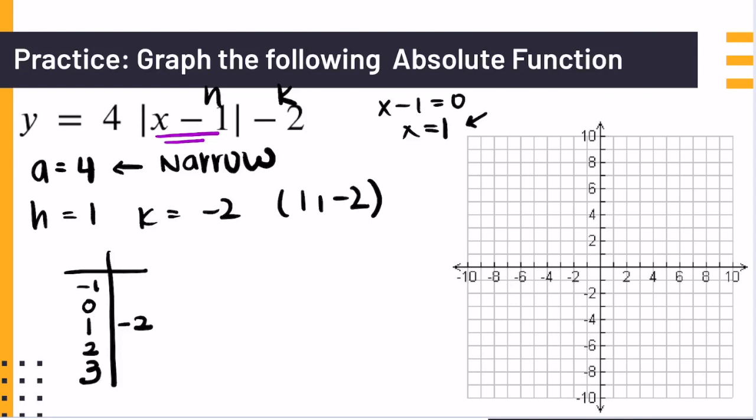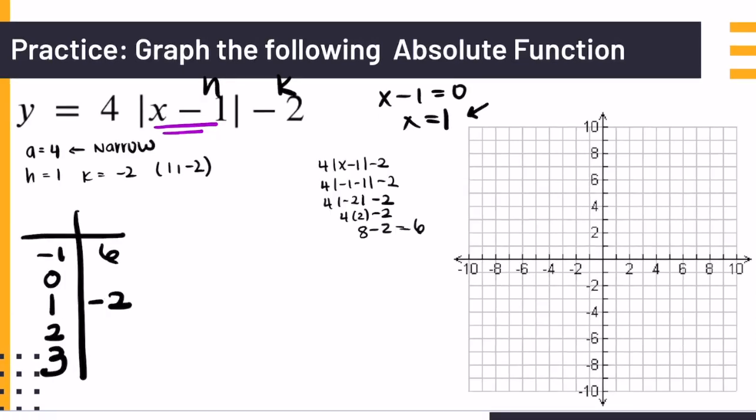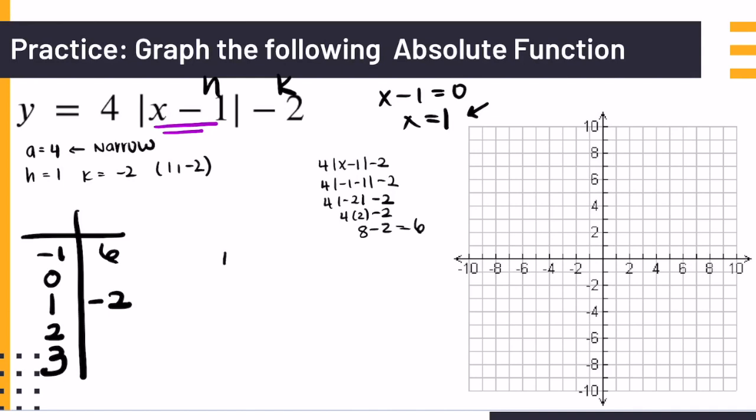Then you plug it into the original function, which is 4 absolute value of x minus 1 minus 2. For example, if you plug in negative 1, we'll get 4 times the absolute value of negative 2 minus 2. The absolute value of negative 2 is positive 2, and then we get 8 minus 2, which is 6. To solve for our next point, plug in 0 for x: 4 times 0 minus 1 minus 2. Simplify. Remember absolute value of negative 1 is 1. Get 2.